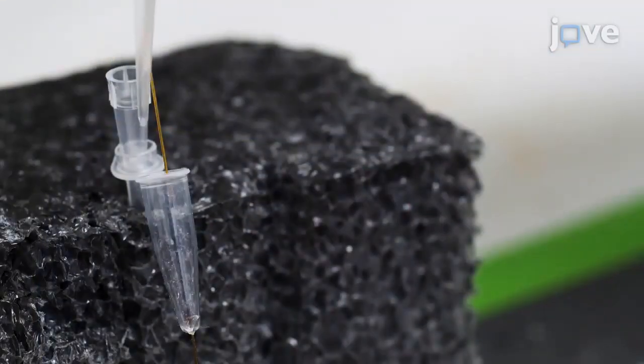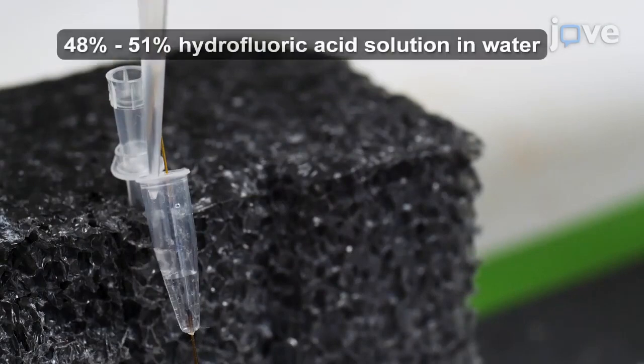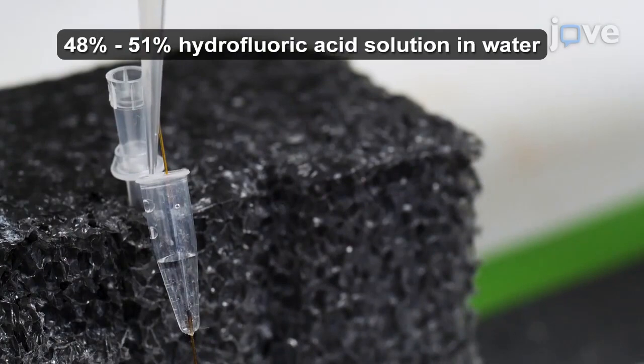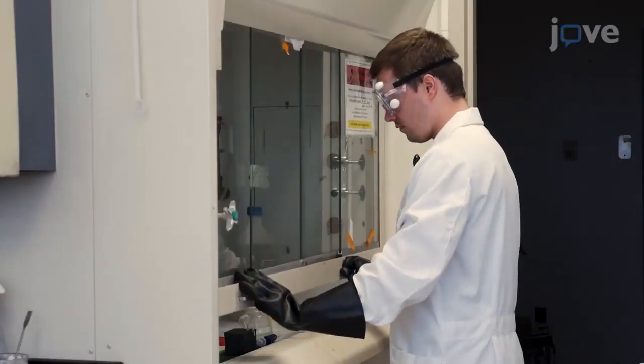Then add approximately 150 microliters of HF to the 200 microliter tube so that the HF solution is about halfway up the burnt portion on the capillary. Incubate the capillary in the HF solution at room temperature for 90 to 100 minutes.